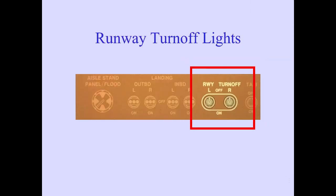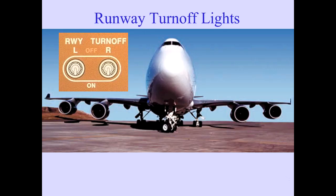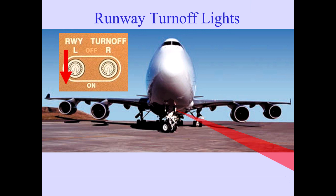Left and right runway turnoff light switches control the runway turnoff lights. Two runway turnoff lights are mounted on the nose gear structure left and right of the airplane centerline. The runway turnoff lights illuminate only when the air-ground sensing system is in the ground mode and the appropriate switch is selected to on.